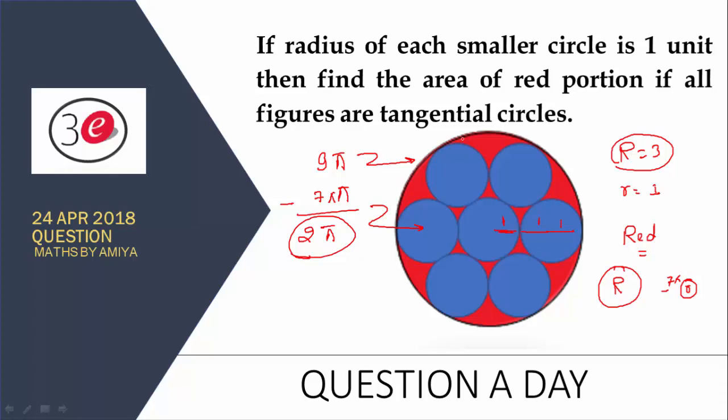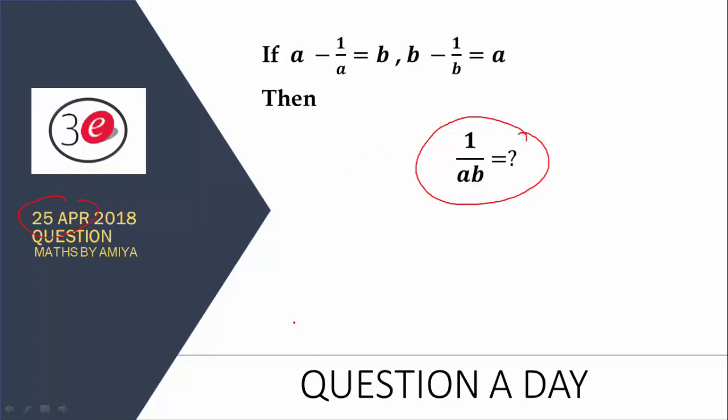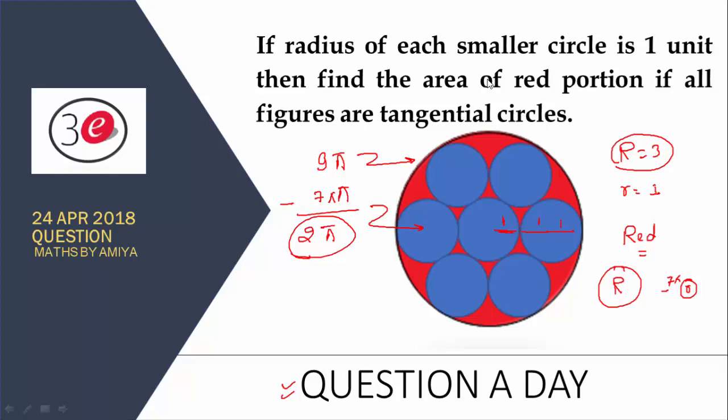So this is one of the easiest questions I have ever posted on a question a day. So you have to solve today's question, which is nothing but you need to find 1 upon AB if you have this condition. I hope this one is clear. If you have any doubt, feel free to ping me on either YouTube or on any my portal or the social group.